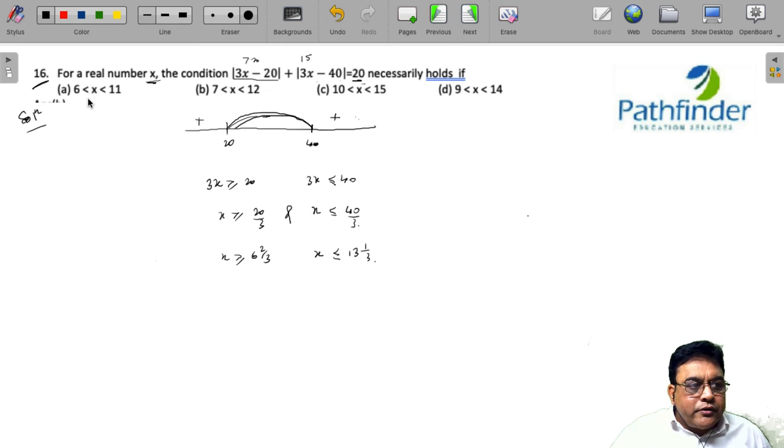So, now look at the options. This option does not satisfy because greater than equal to 6 and 2/3. This option satisfies. C does not satisfy and D also does not satisfy. So, the only possible answer is B.